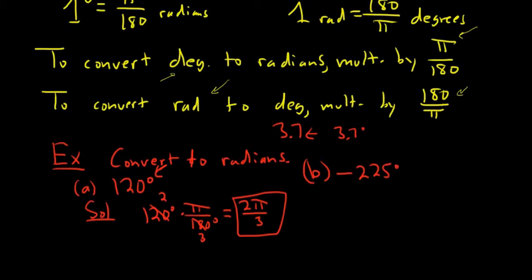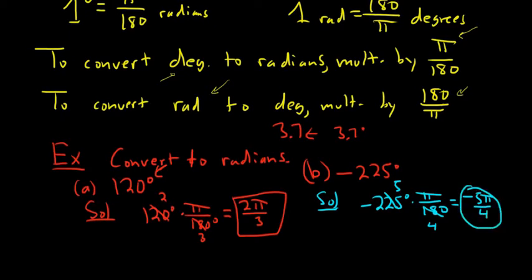Negative 225 degrees. So we want to convert this to radians. So solution. So we just multiply it. So negative 225 times π over 180. Okay, this one's a little bit harder. I think 45 will go into 180 four times, and then into this five times. So this will be negative 5π over 4. So yeah, 45. So we're dividing by 45 here.